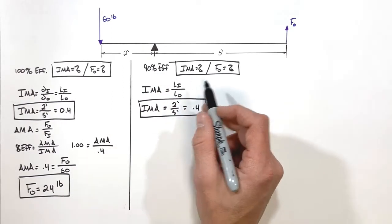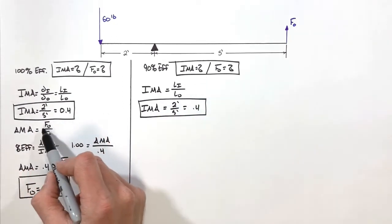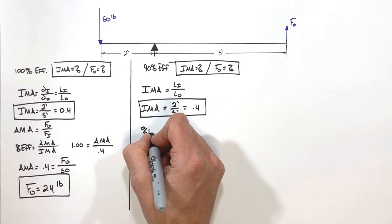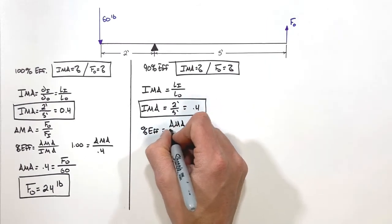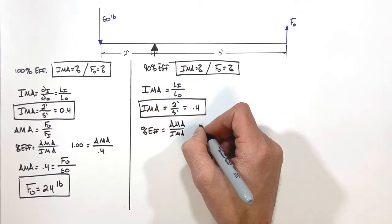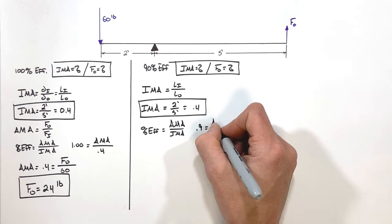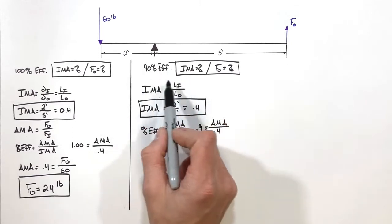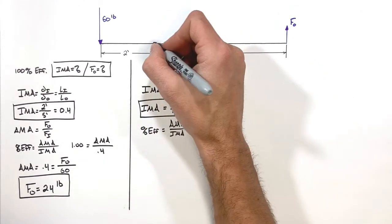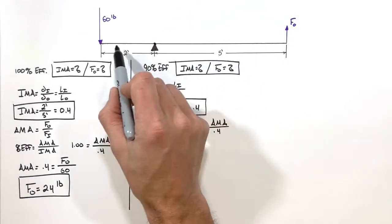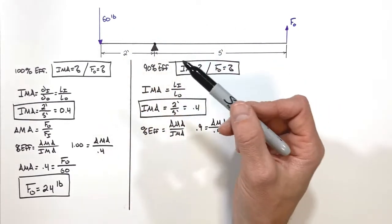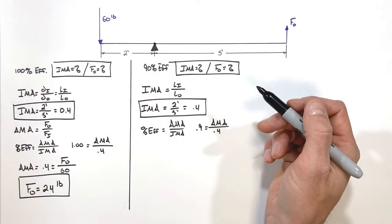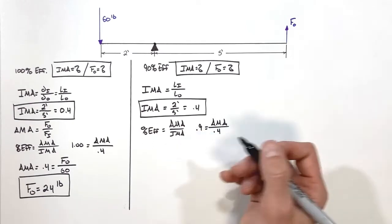What is going to change in this problem is the actual mechanical advantage. AMA still follows F_out over F_in — that never changes. The issue is that our percent efficiency has changed. Percent efficiency is still AMA over IMA, but this time we have 0.9 equals AMA over 0.4. The 0.9 comes from 90% expressed as a decimal. What makes the lever less efficient is largely friction around the fulcrum, or any outside forces that take energy away so it doesn't get transferred to the output side.